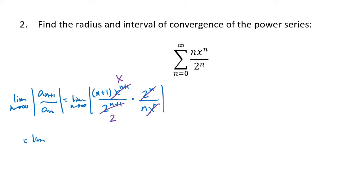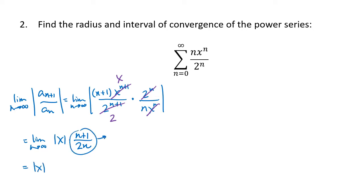We end up with the limit as n goes to infinity. The absolute value only applies to x here — all the n terms and the 2 are positive, so the absolute value doesn't affect them. We get the absolute value of x multiplied by (n+1) on top and 2n on the bottom. As n goes to infinity, this fraction goes to one half, so we get the absolute value of x multiplied by one half.